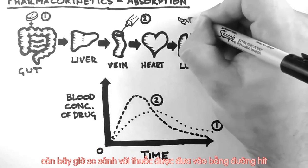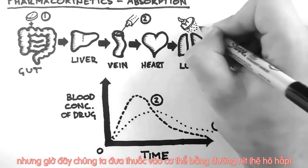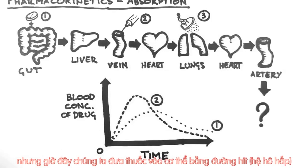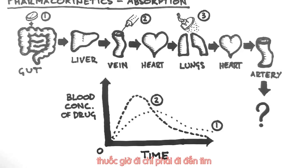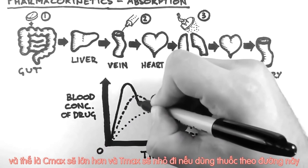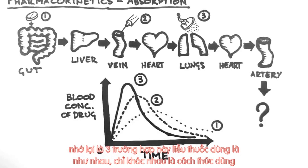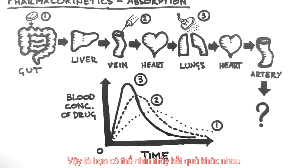Now contrast this with inhalation of a drug. Let's again assume that we have given the same dose as the last two examples, but this time we are giving it as an inhaled form. Many anaesthetics are actually given this way. The drug now only has to go to the heart and then straight on to the arterial circulation, meaning we will see the concentration of the drug shoot up very quickly. Note the much larger C-max and the even smaller T-max via this route. Also remember that in all three examples the dose of the drug was identical — only the route of administration changed.